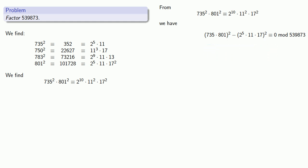Since this is a difference of perfect squares, I can factor the left-hand side. That tells me the greatest common divisor of 735 times 801, plus or minus 2^5 times 11 times 17, and 539873 will actually be a factor of our modulus.